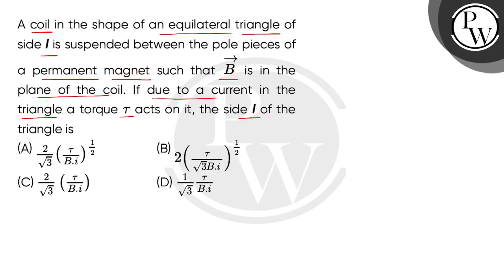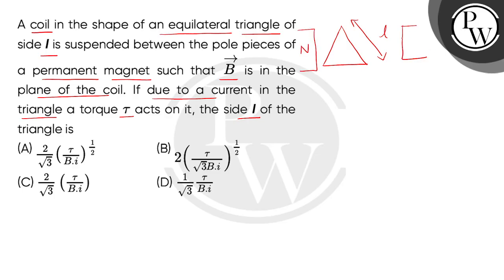So children, we have a question here. A coil which is in an equilateral triangle shape, and we have given that each side of the triangle is measured L. Now we have to suspend it under a permanent magnet pole such that this is North Pole and this is South Pole. Now the B vector is in the plane of the coil — it means the magnetic lines of force are passing through the plane of the coil.